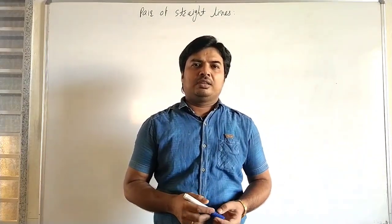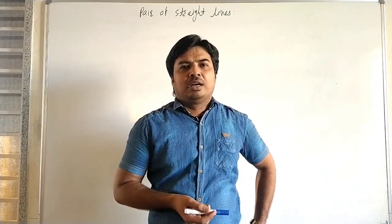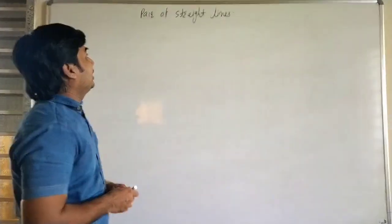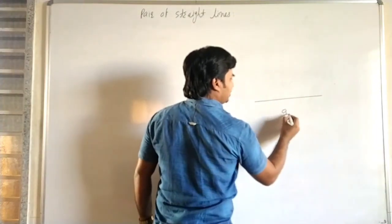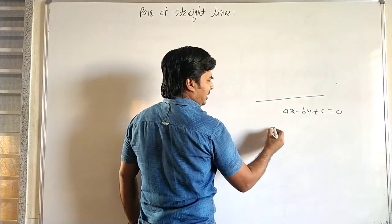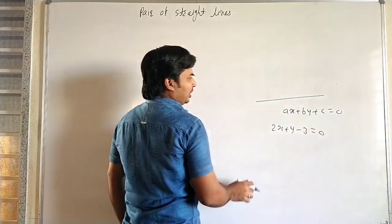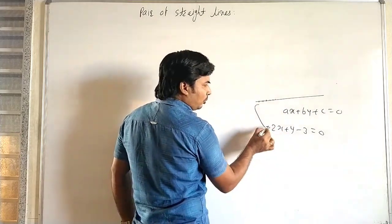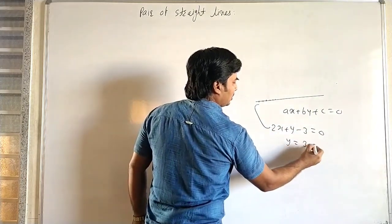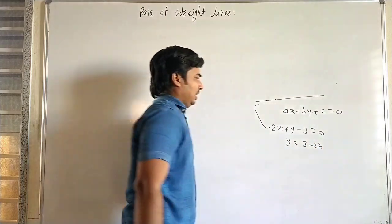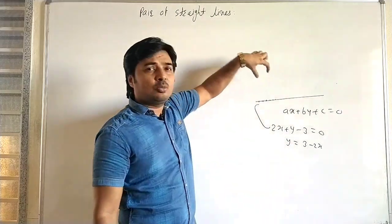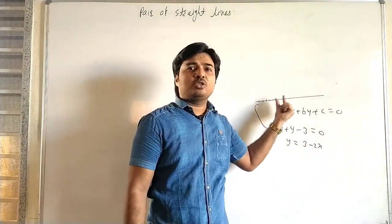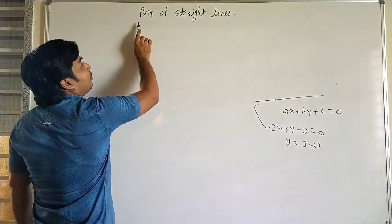Today we start Chapter 4 - Pair of Straight Lines, for Class 12. We know what a straight line is; we learned all concepts of straight lines in Class 11. A straight line has equation ax plus by plus c equal to 0. For example, 2x plus y minus 3 equal to 0. A line is a collection of all points which satisfy this condition — it is the locus of points satisfying the equation.